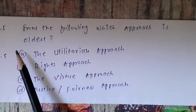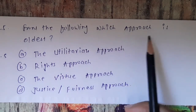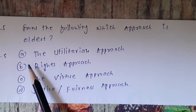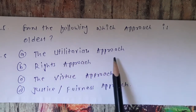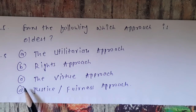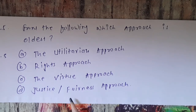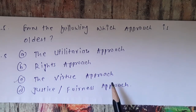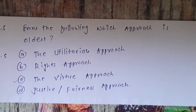Question 5: From the following, which approach is the oldest? Options are: A) The Utilitarian approach, B) Rights approach, C) The Virtue approach, D) Justice or Fairness approach. The correct answer is option C — The Virtue approach is the oldest approach among these. Thanks for watching.